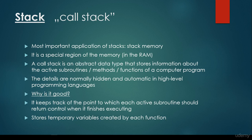In this video we are going to talk about the main differences between the stack memory and the heap memory. Stack memory is the most important application of the stack abstract data type. It is a special region of the memory in the so-called random access memory, and a call stack is an abstract data type that stores information about the active subroutines or methods or functions of a computer program.